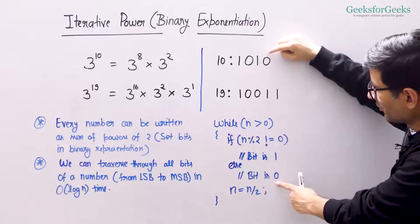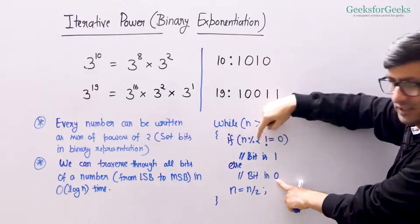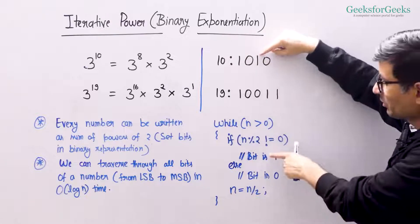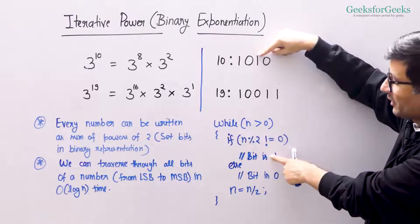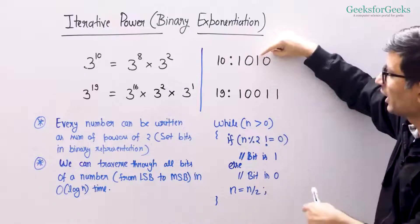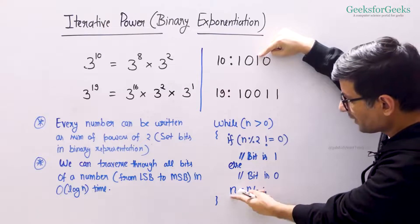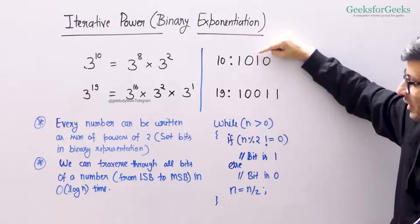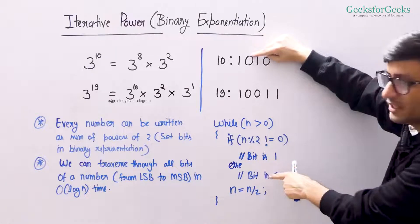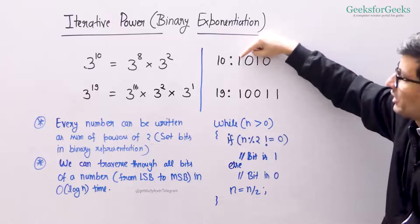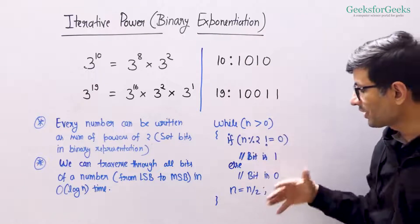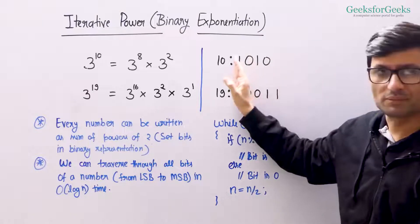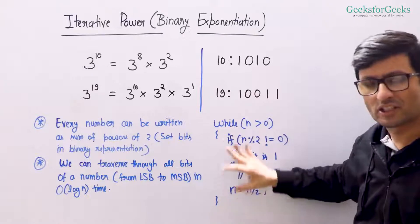You will get 0 first, because the remainder is 0. You will come into the else part and reduce 10 to 5. Then in the next iteration, n has reduced to 5, so you come into the if part. After that you make n equal to n divided by 2 again, so n becomes 2, and you come into the 0 part. Then you make n equal to 1 and come to the 1 part. This way you can generate all bits of a number from LSB to MSB, and this is just a log n loop.